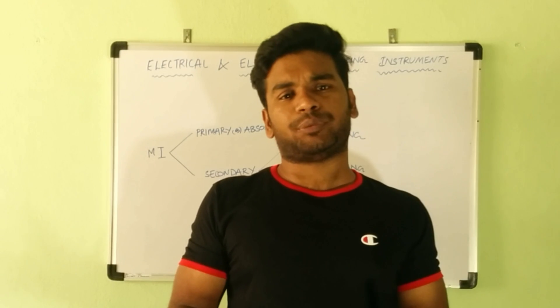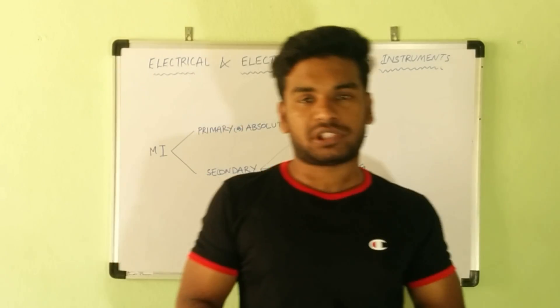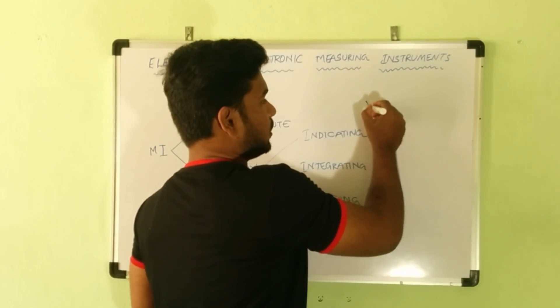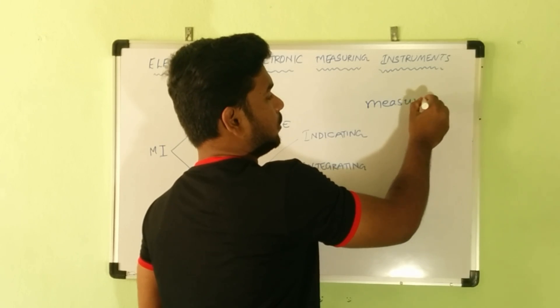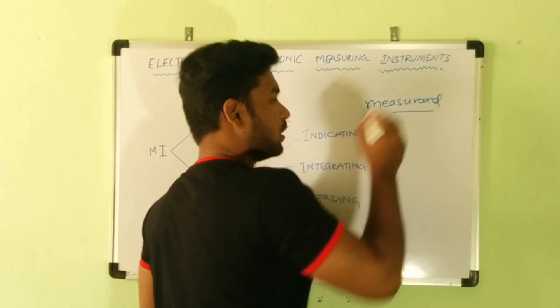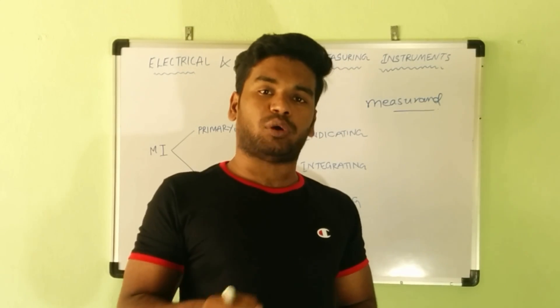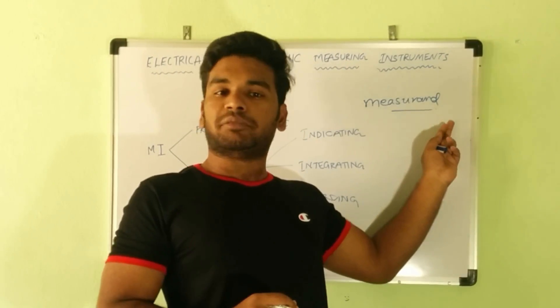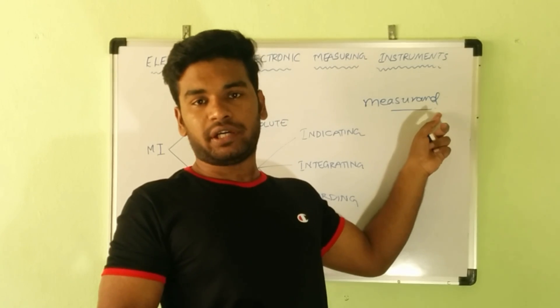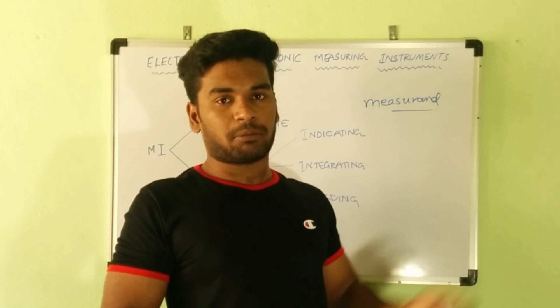We know a measuring instrument is an instrument which measures some quantity. Here you have to note one terminology called 'measurand.' What do you mean by measurand? The quantity which is under measurement, or the quantity which is being measured, is known as the measurand. To measure the measurand, we need a measuring instrument.